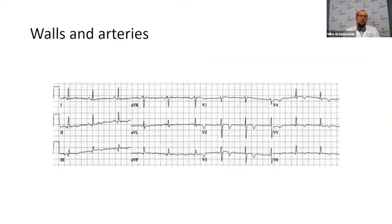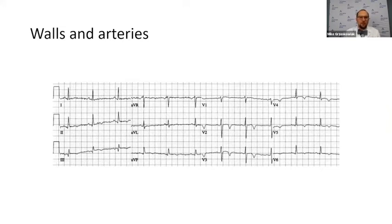Next, I want to talk about the walls and the arteries. Most of you have probably seen this before — looking at which leads on the EKG correspond to what walls and arteries. What's important to note is that when we talk about walls and arteries, you can only localize ischemia with ST elevations. If you have T-wave inversions, you can't say that inferior T-wave inversions correlate to the right coronary artery, because from the studies, they don't correlate that well.